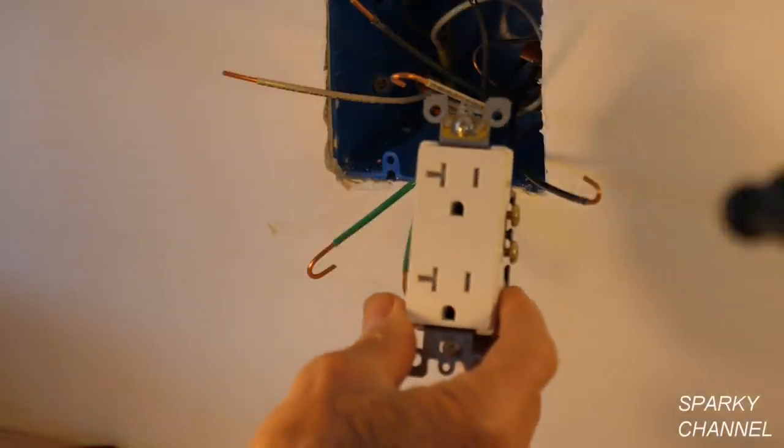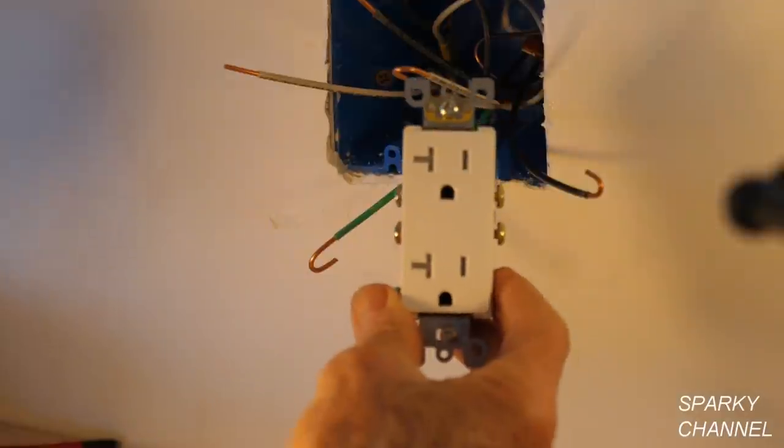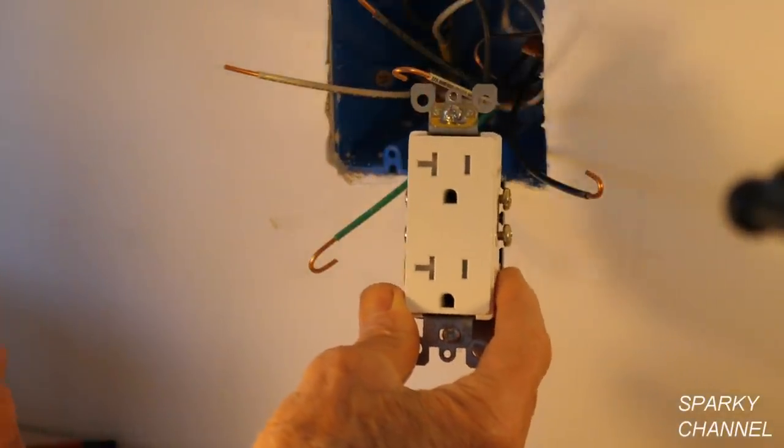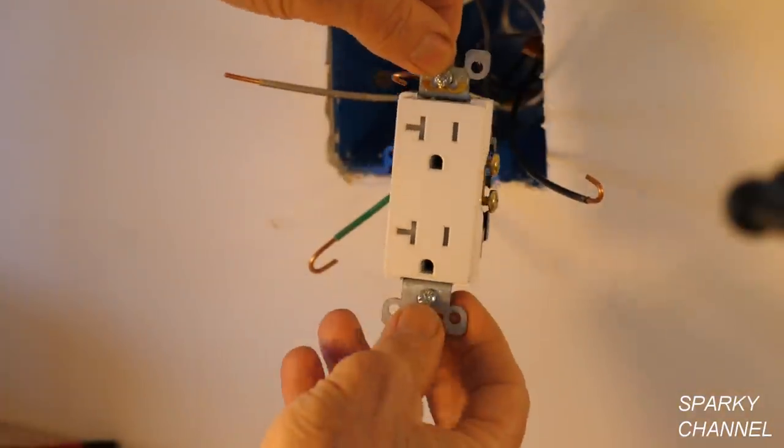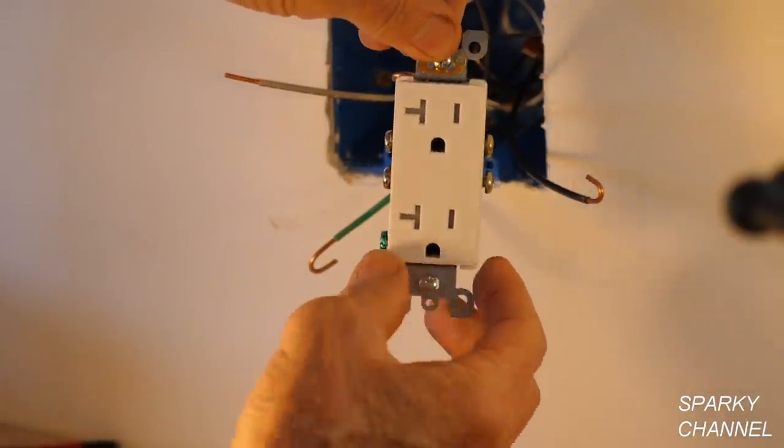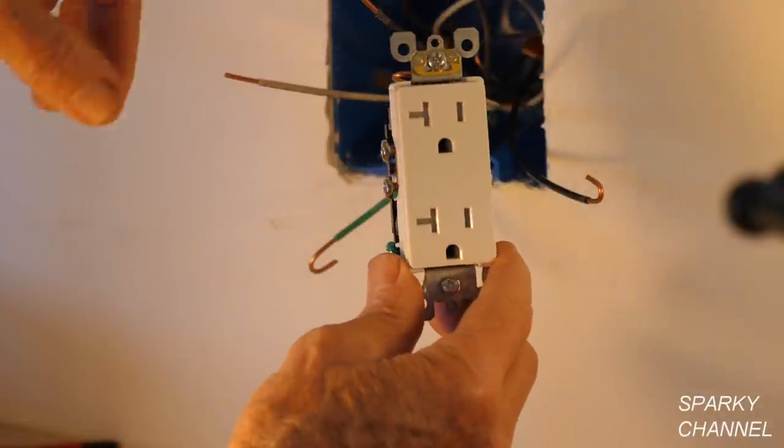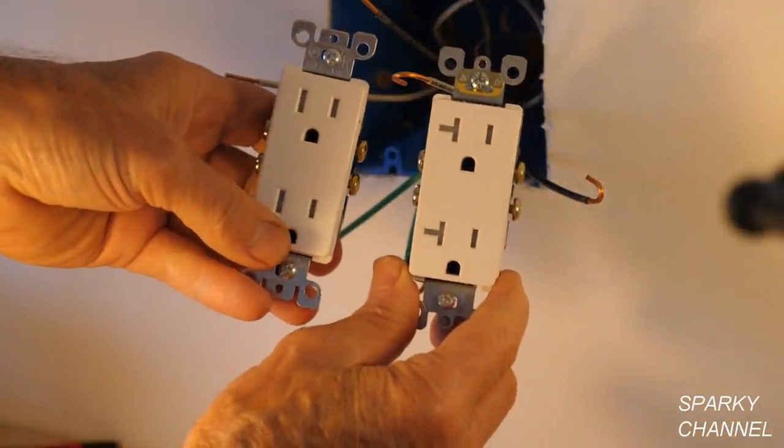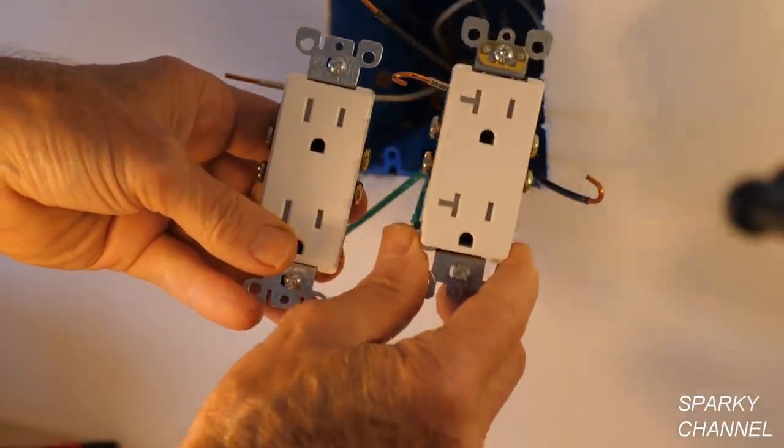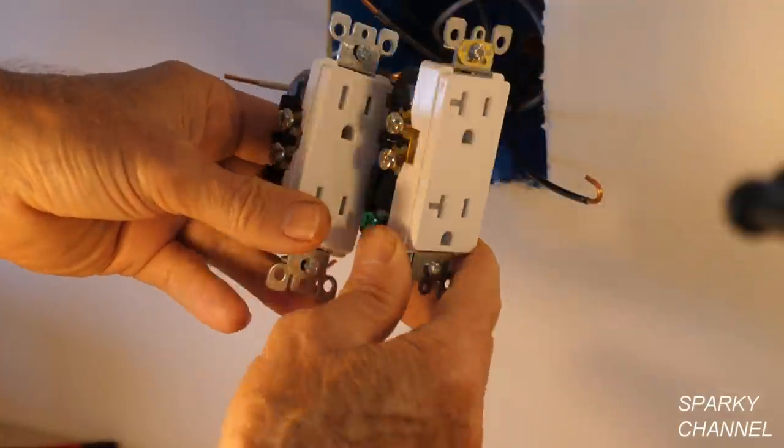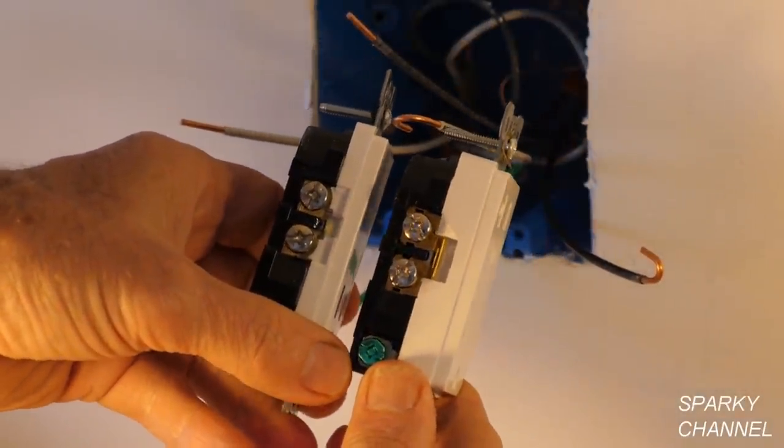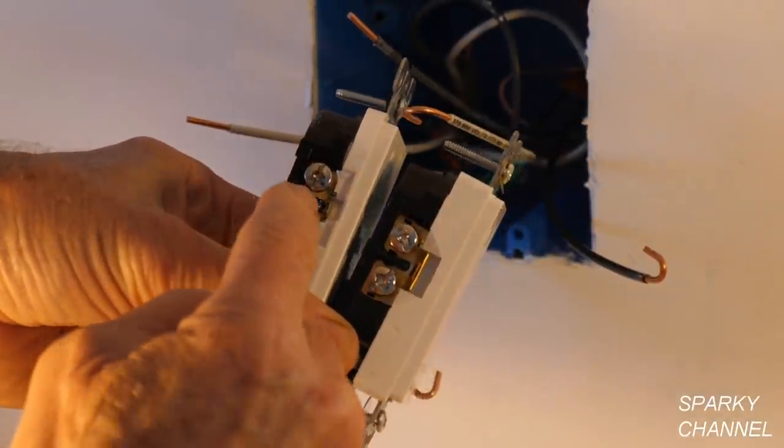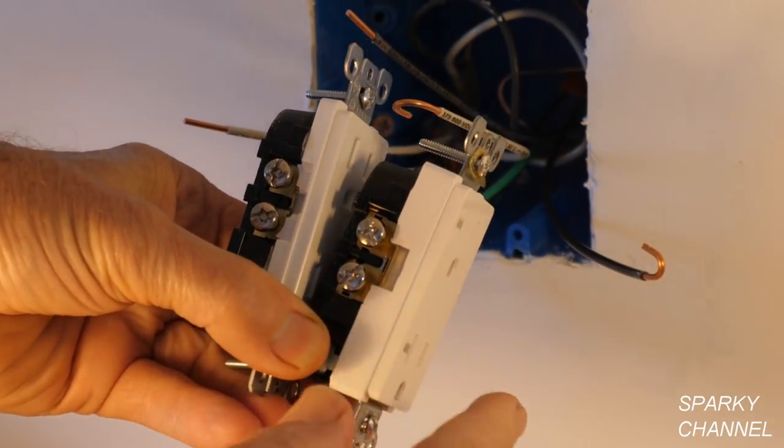I'll install the 20 amp duplex receptacle first. Now I know that I'm going to get questions, why did I choose a 20 amp receptacle? Well, these 20 amp receptacles are much more heavy duty than the 15 amp receptacles. This is a Leviton Decora, and this is a Leviton Decora 15 amp. This one's 20 amp here, this one's 15 amp, and look at the difference. So this is the exact same model, except that this one is the 20 amp and this one is the 15 amp. So this is much more heavy duty.